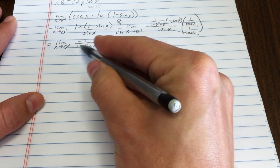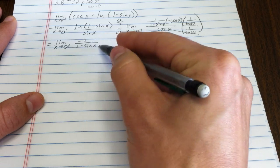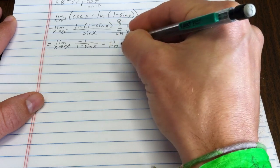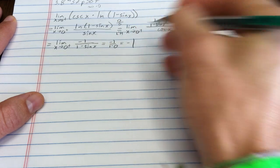That's rather convenient, because as x goes to 0 from the positive side, sine x goes to 0. I get negative 1 over 1 minus 0. Using substitution, that's just negative 1.